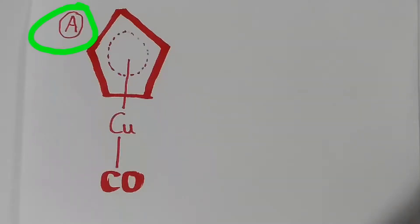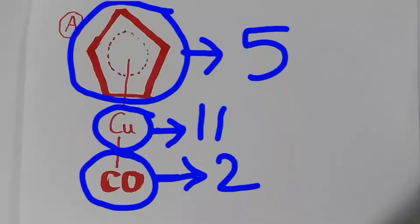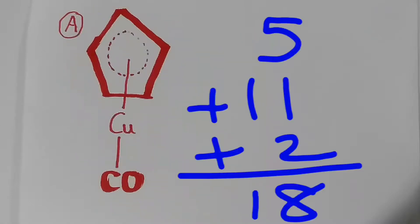In molecule A, this ring will donate 5 electrons. Copper will donate 11 electrons. Carbonyl will give 2 electrons. I am following the neutral count method. So the total electron 5 plus 11 plus 2 is equal to 18.